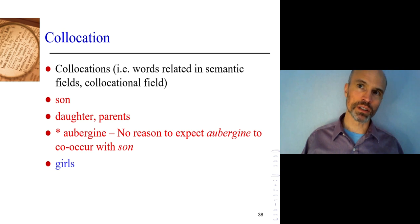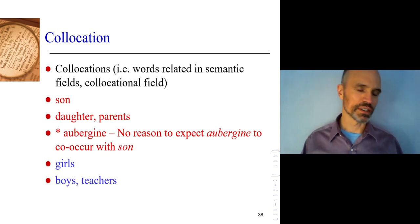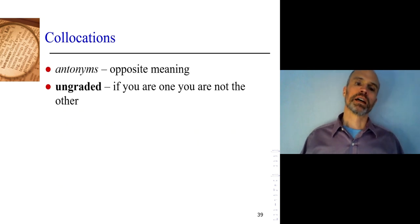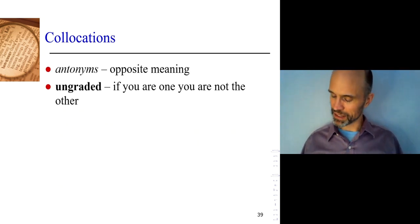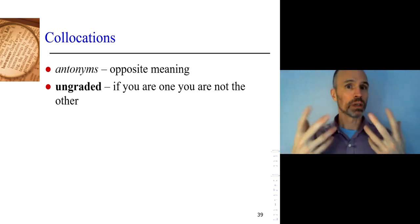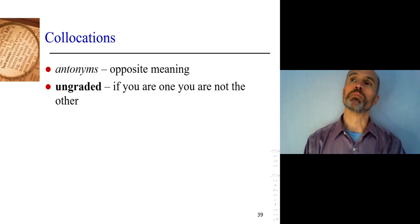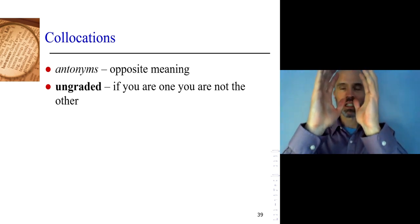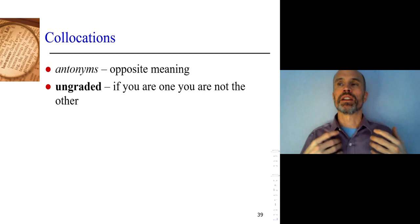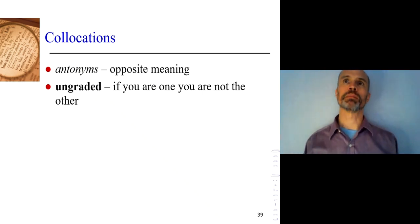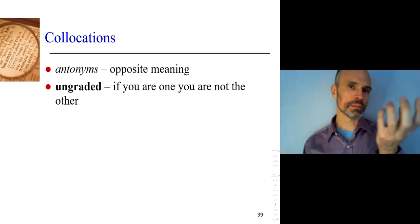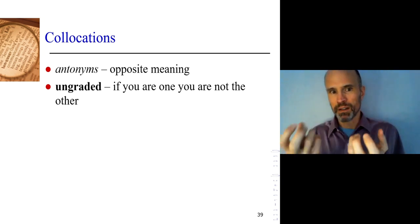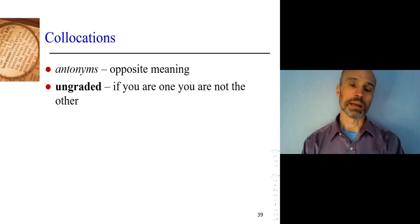One type of collocation that you probably know is antonyms — words that have an opposite meaning. You can see that these are collocations: if you talk about something, it becomes more likely that you would also talk about the opposite of that thing. So antonyms are a type of collocation. Antonyms can be ungraded — you're one or the other. You're dead or you're alive. You can enter or you can exit the room through the door; you can't do both at the same time.